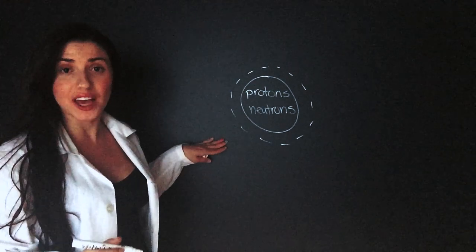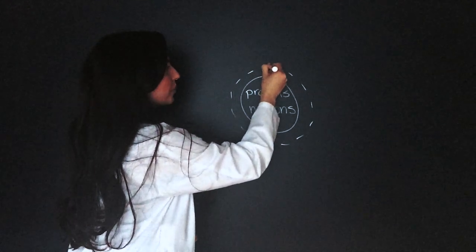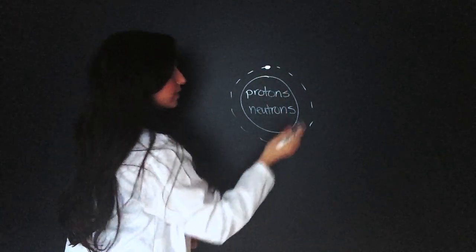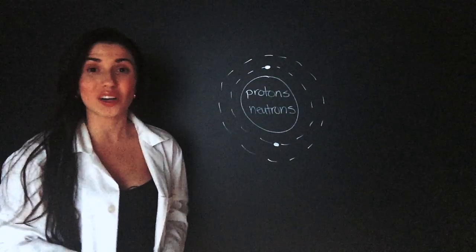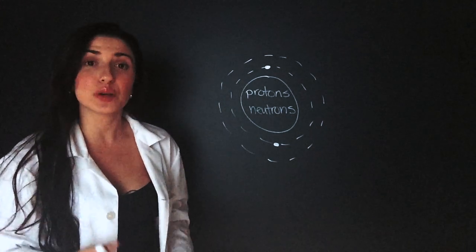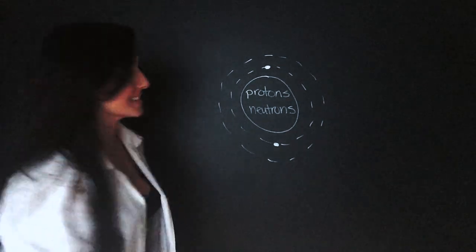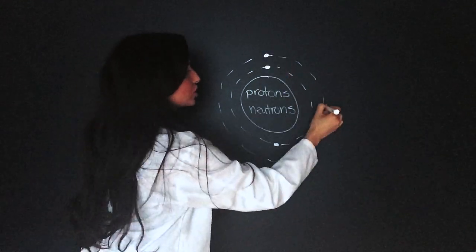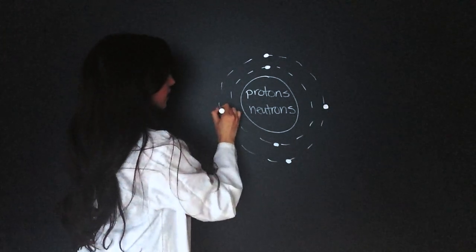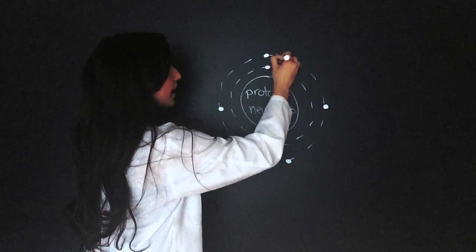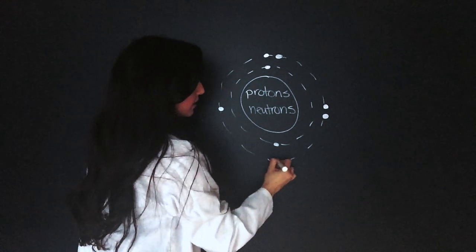The first shell only holds two electrons and their locations are at the top and the bottom. The next shell can hold eight electrons. And when we're drawing them, we draw them singularly first and then pair them up like this: 1, 2, 3, 4, 5, 6, 7, 8.